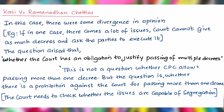In the next case, Kashi v. Ramanad and Chettyar, there was some divergence of opinion. For example, if in one case there come a lot of issues, the court cannot simply pass as many decrees and ask the parties to execute them. The question arose whether the court has an obligation to justify the passing of multiple decrees. It was held that this is not a question of whether the CPC allows passing more than one decree, but whether there is a prohibition against the court for passing more than one decree. That is, before passing decrees, the court needs to check whether the issues are capable of segregation.